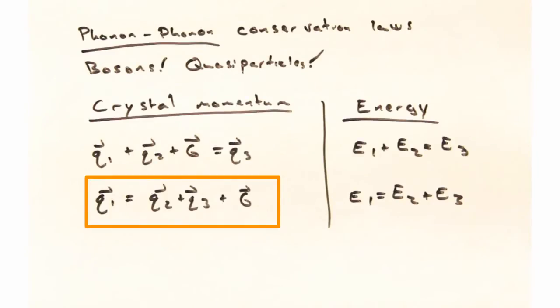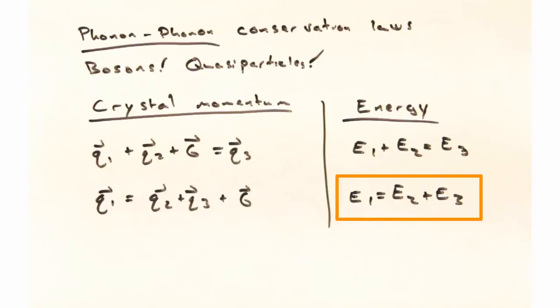Likewise, you can see how we could start with some high-energy phonon, and that phonon could then split into two other phonons, Q2 and Q3, plus some reciprocal lattice vector g. Looking to the right here, we can see this energy conservation law for this phonon decaying into two other phonons.